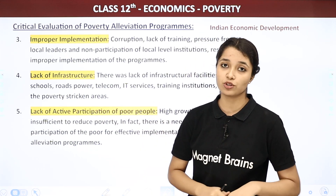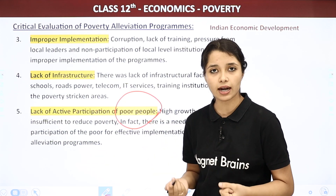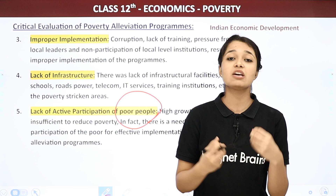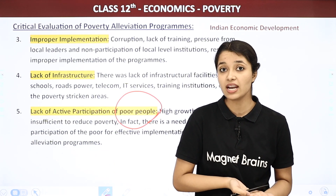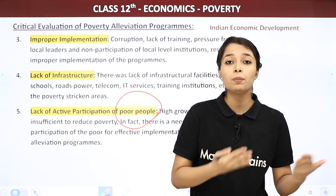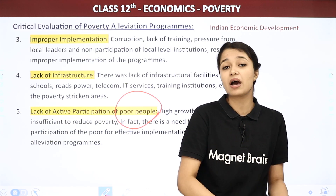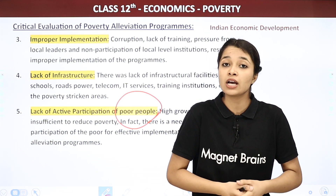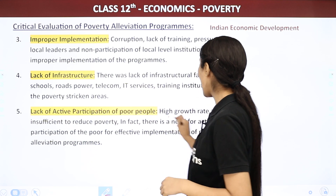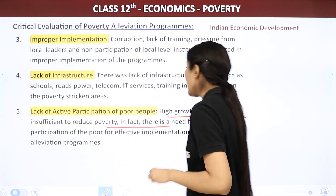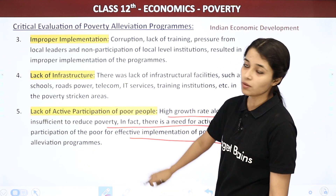Fifth and most important reason: Lack of active participation of poor people. These programs are implemented and launched for poor people, but if they are not participating, then what do these programs mean? If poor people are not participating, the government cannot go to their homes and force them. So the programs will not achieve the desired success. High growth rate alone is insufficient to reduce poverty — there is a need for active participation of the poor for effective implementation of poverty elevation programs.